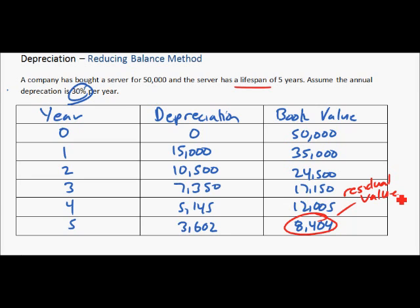Hopefully we can sell it for that amount of money. Another really important thing to notice on the reducing balance method is how the depreciation changes. In year one it's $15,000 versus year five at $3,602. Compared to the straight line method where depreciation would be the same every year, here in year one it's much, much higher — almost four and a half times higher than year five.